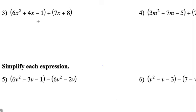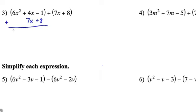Here's another one. We have 6x squared plus 4x minus 1, plus 7x plus 8. I'll line up my like terms, combine them, and we get a sum of 6x squared plus 11x plus 7.